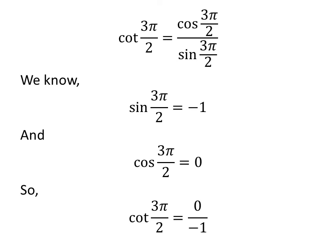Let us apply the above identities in the expression for cotangent of 3π/2. So, cotangent of 3π/2 equals 0 divided by -1.